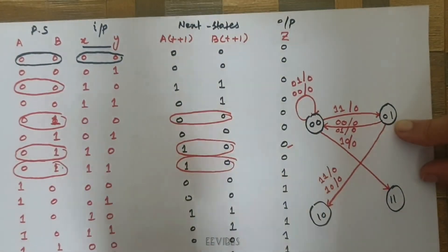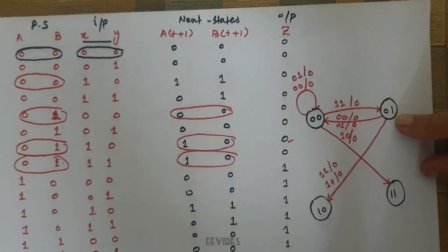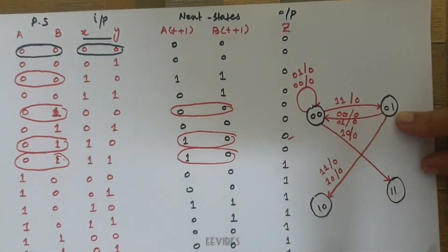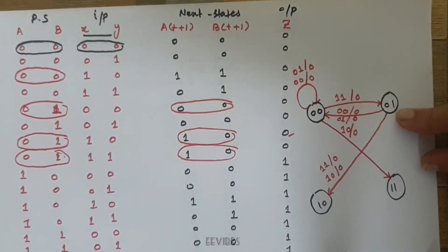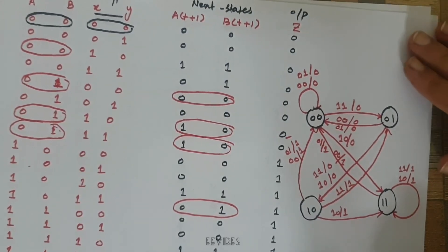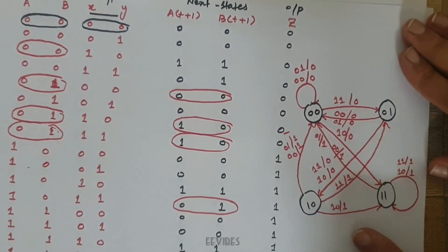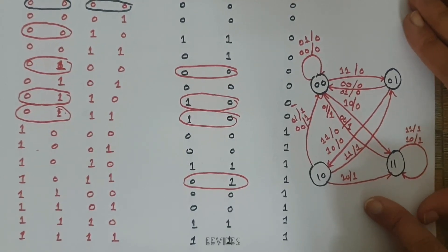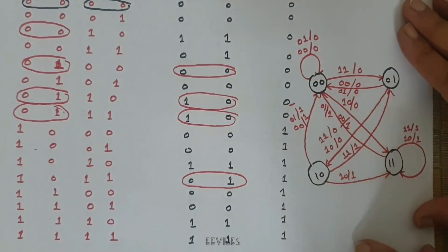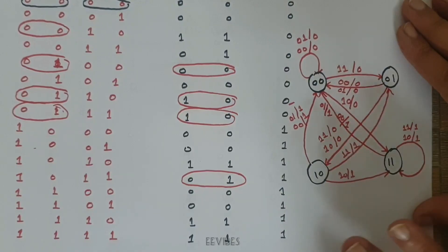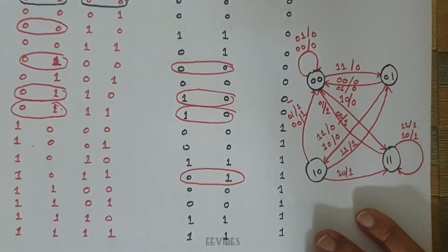Using this topology we can draw the complete state diagram. Here is the finalized form of the state diagram drawn using the same information present in the state table. If you have any questions, you can drop them in the comment section. Thank you for watching.